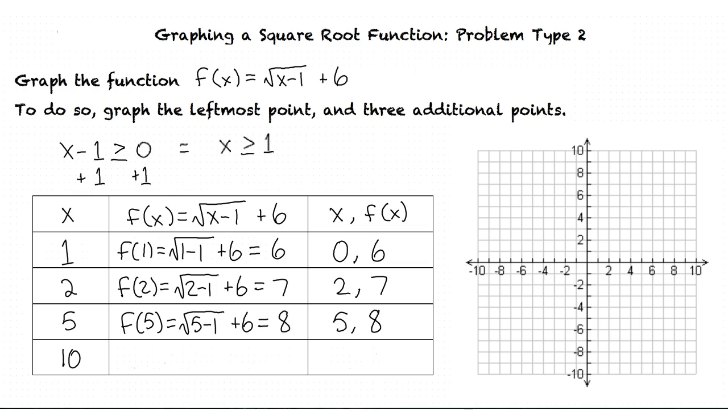And for the last point, you input 10 for the x's and get f of 10 equals square root of 10 minus 1 plus 6. 10 minus 1 equals 9, and the square root of 9 is 3, which when added to 6 gives us 9. You're really getting this. So that means our last point is 10 comma 9.